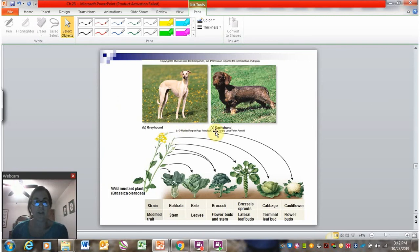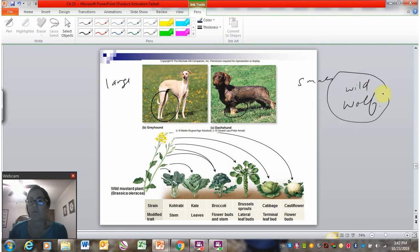So to take a closer look at the dog example, we have the greyhound and the dachshund. I always forget how you say this. The weenie dog is their non-formal name. So this is a very large dog with very long legs, and this is a very small dog with extremely short legs. All dogs trace their ancestry to the wolf. So this is the wild animal.